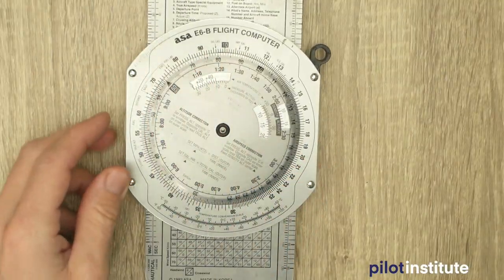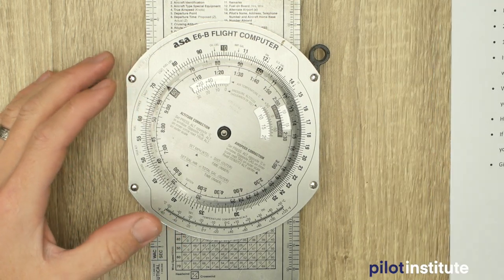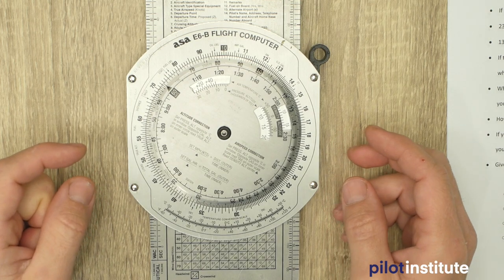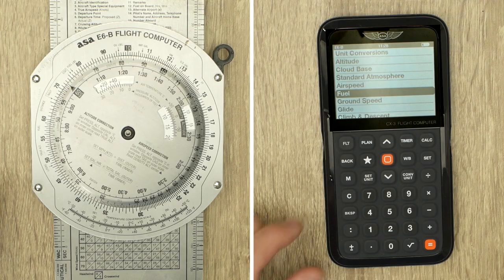So first off, I'm going to be using the E6B right here, and I'll be writing down my answers next to it right here, and then I'll switch and go to the CX-3. Okay, in three, two, one, go!